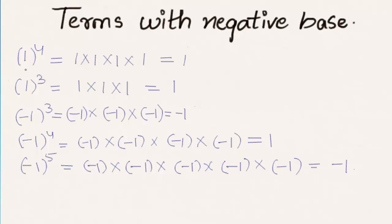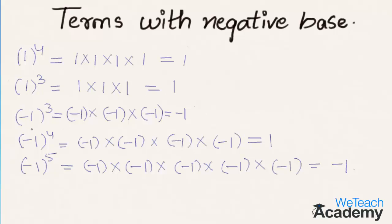Here 1 raised to the power 4 is nothing but 1 multiplied by itself 4 times, and we get the result 1. Similarly, 1 raised to the power 3 is nothing but 1 multiplied by itself 3 times, and we get result 1. Coming to the negative base, that is minus 1 raised to the power 3.